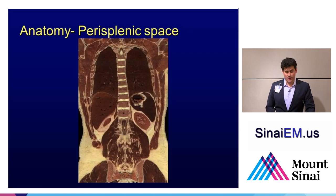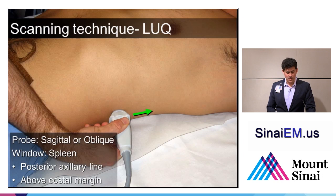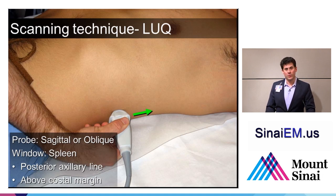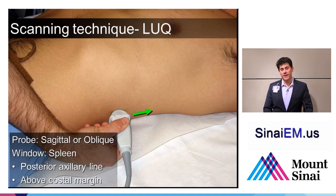Moving on to the left upper quadrant, we'll go back to this coronal slice through the human anatomy to see where we would actually place the probe. It's going to be in a coronal or sagittal section oriented up towards the patient's head, using the spleen as a window looking into the area all around the spleen. The probe should be held in a sagittal orientation with the probe marker towards the patient's head. You might even hold the probe a bit obliquely, with the probe marker towards the back of the bed, getting an angle of your ultrasound beam more parallel to the rib spaces. The left side position is higher and more posterior compared to the right.